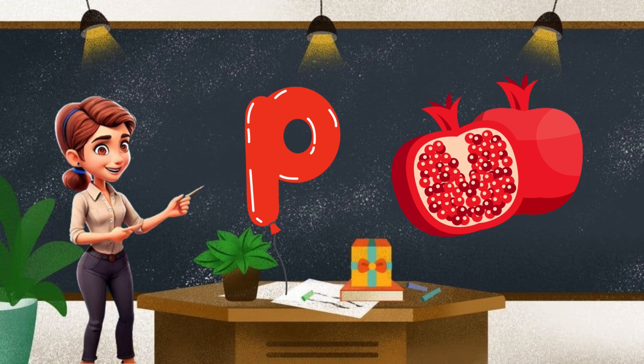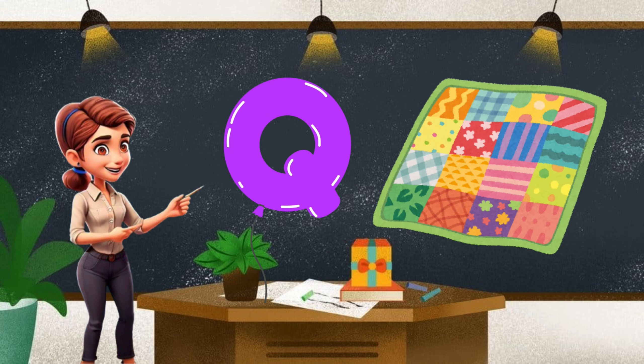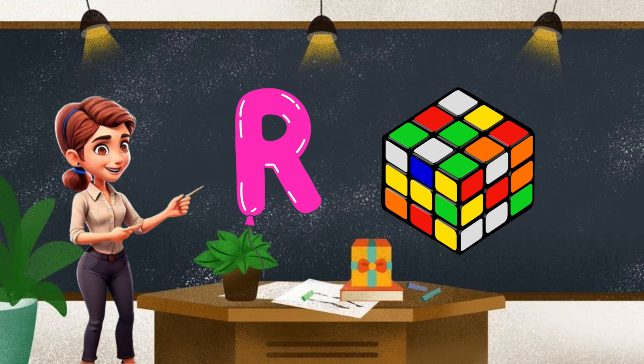P. P for pomegranate. It's red. Q. Q for quilt. It's multi-colored. It's gold. R. R for Rubik's cube. So many colors.